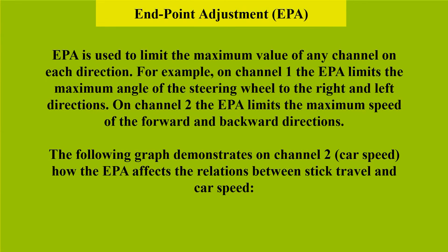EPA, which is endpoint adjustment, is used to limit the maximum value of any channel on each direction. For example, on Channel 1, the EPA limits the maximum angle of the steering wheel to the right and left directions. On Channel 2, the EPA limits the maximum speed of the forward and backward directions.